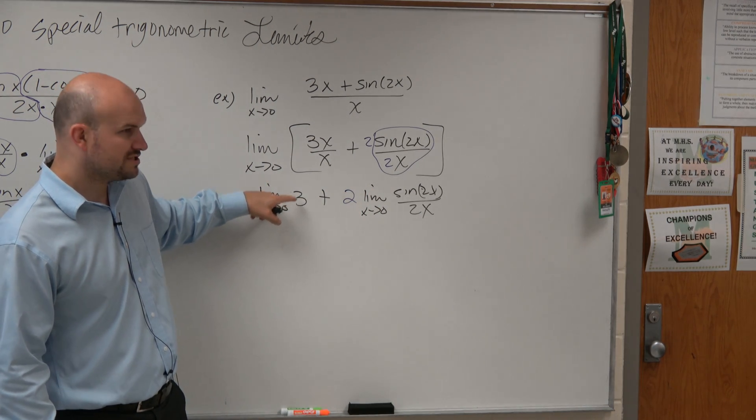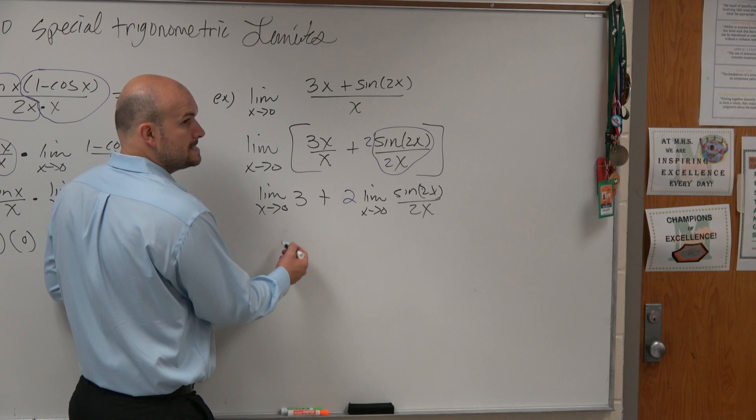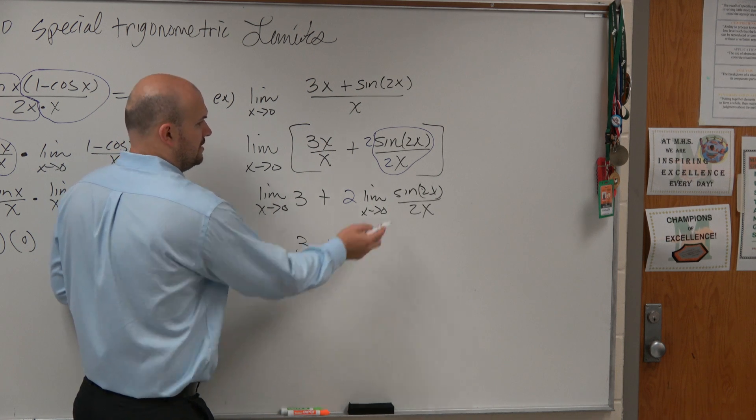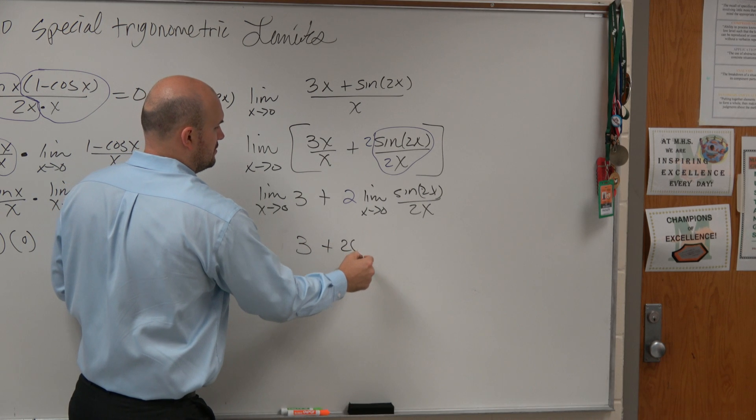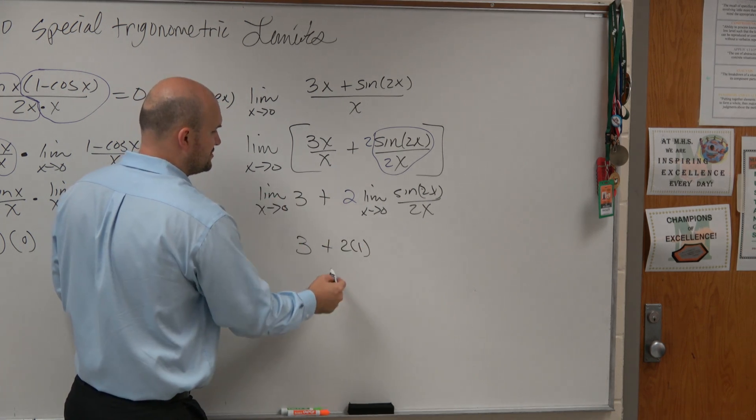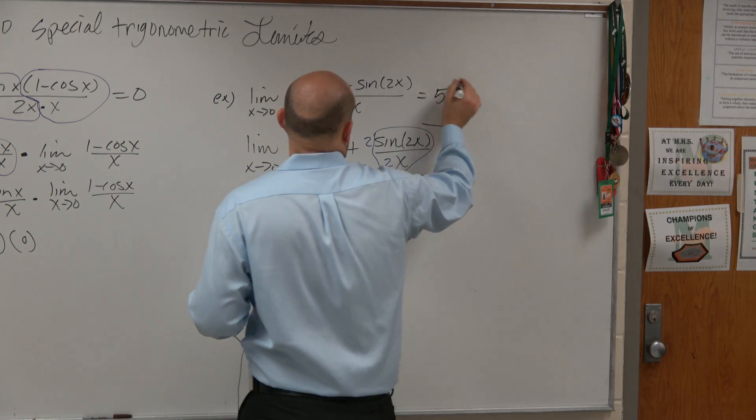So what's the limit as x approaches 0 of 3? 3. Limit of sine of x over 2x is going to be just 1. 3 plus 2 is going to equal 5.